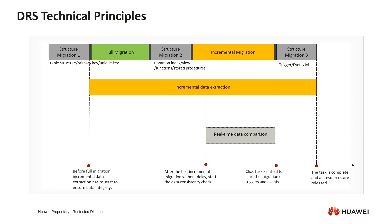The last phase is when we are sure we don't need data synchronization anymore. We can click a button on the page to end the task. During the task ending process, DRS tries to migrate trigger events and other objects that might affect incremental data from the database. Once this is done, DRS-related instance resources are released.